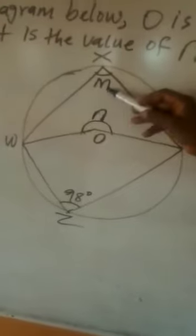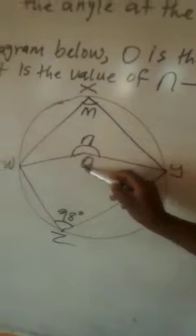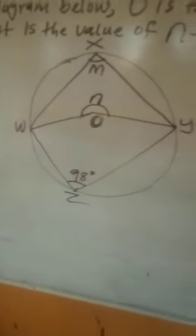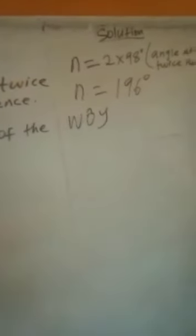Now before I find M — because N is not the center to M, the center to M is this O — so how I am going to find O, which is angle W-O-Y: angle O will be equal to 360 degrees minus 196 degrees. We call this the angle at a point, or a reflex angle. When we subtract, we are going to get 164 degrees.